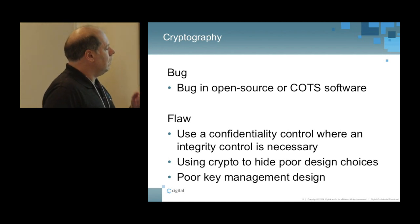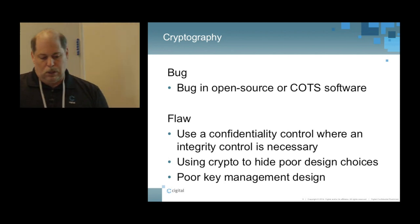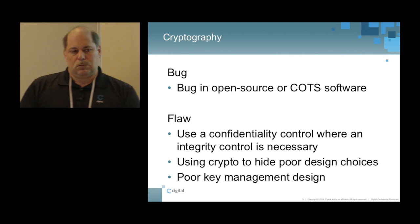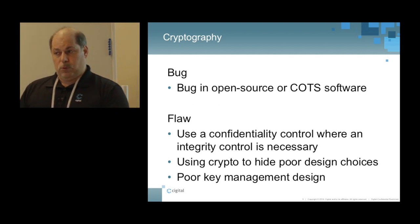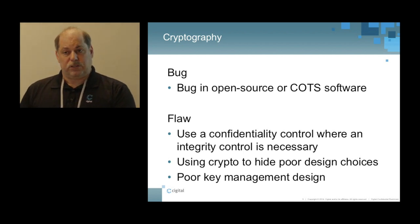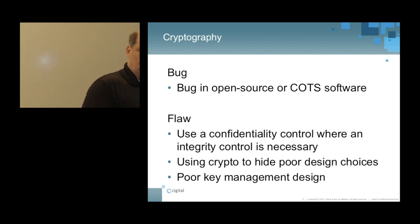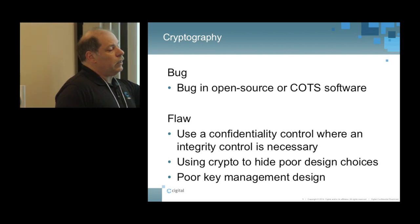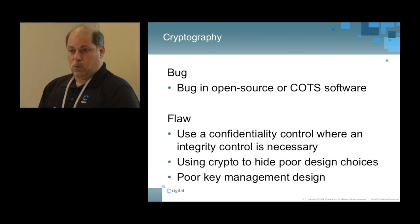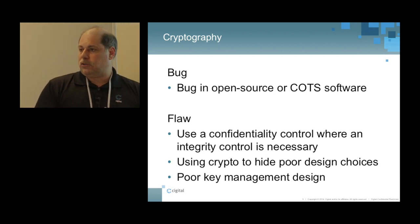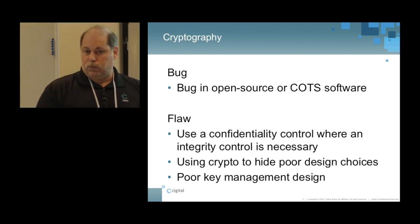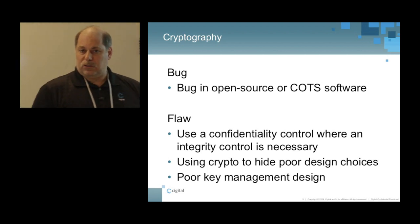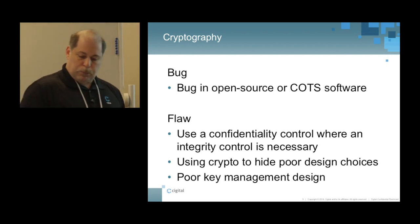Another issue with crypto is that developers — not malicious ones, but those who don't really know what they're doing — try to hide poor designs by saying 'we're going to encrypt things and therefore protect ourselves.' Crypto is not good for hiding poor designs; it just makes the design unreadable. It's still a poor design. Another big problem in the cryptography world from a flaw perspective is key management — lots of things can go wrong there. How key rotation is going to happen, how we deal with different versions of encrypted data — these are design flaws. How the software design makes use of key management and key rotation are big problems to solve.